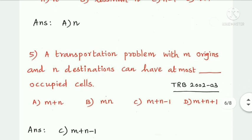A transportation problem with M origins and N destinations can have at most a certain number of occupied cells. For a transportation problem with M rows and N columns, the maximum number of occupied cells is M plus N minus 1. Option C, the answer is M+N-1.